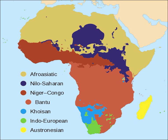Afroasiatic languages are spoken throughout North Africa, the Horn of Africa, Western Asia and parts of the Sahel. There are approximately 375 Afroasiatic languages spoken by over 400 million people. The main subfamilies of Afroasiatic are Berber, Chadic, Cushitic, Egyptian and Semitic. The Afroasiatic homeland is uncertain; however, the family's most extensive branch, the Semitic languages — including Arabic, Amharic and Hebrew among others — seems to have developed in the Arabian Peninsula. The Semitic languages are now the only branch of Afroasiatic spoken outside Africa. Some of the most widely spoken Afroasiatic languages include Arabic, Somali, Berber, Hausa, Amharic and Oromo. Afroasiatic has the longest written history, as both the Akkadian language of Mesopotamia and Ancient Egyptian are members.